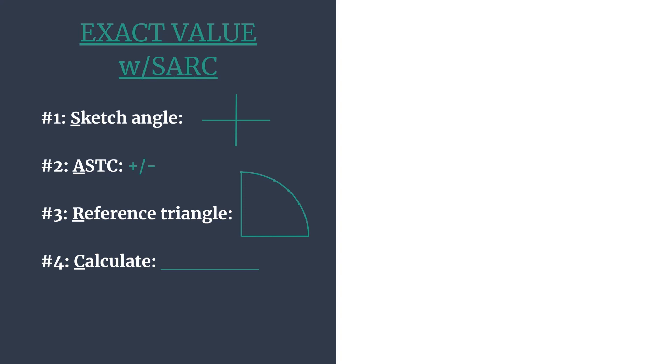A quick breakdown of that: S stands for sketch the angle. We'll do that for the terminal side of the angle. A helps us think of ASTC or all students take classes, it's just an acronym to remember which trig functions are positive in each quadrant. From there we'll be able to decide our final sign for our answer.